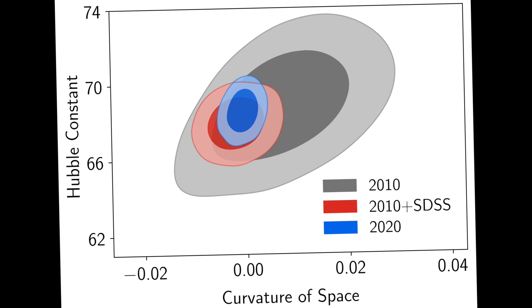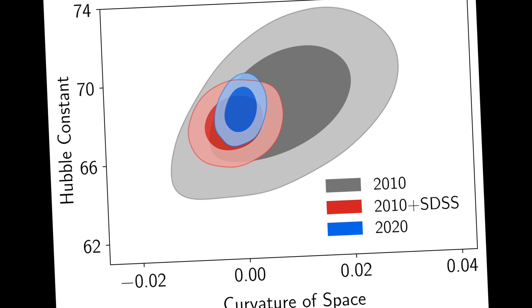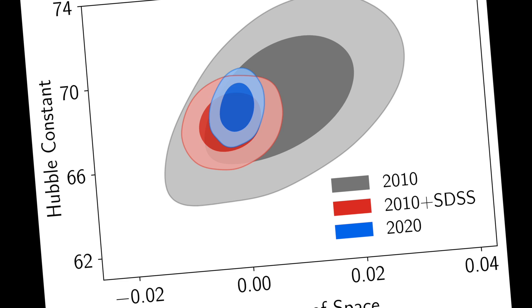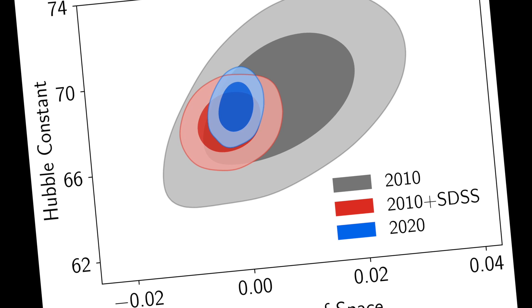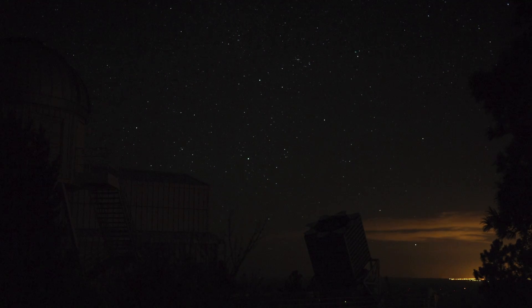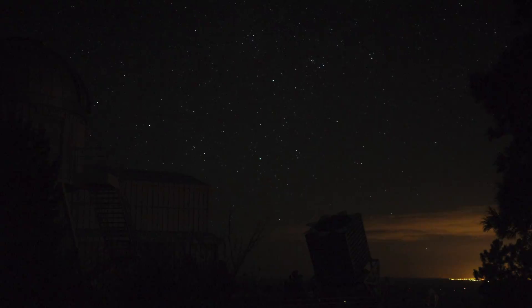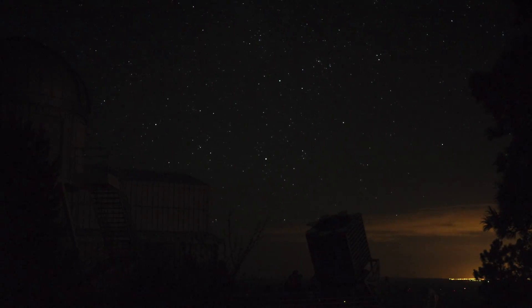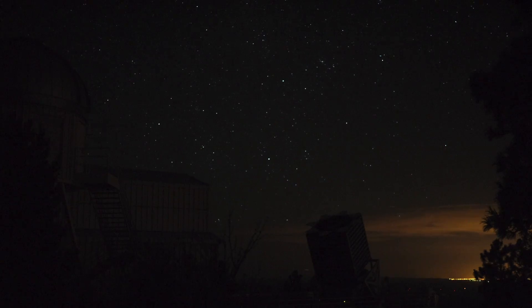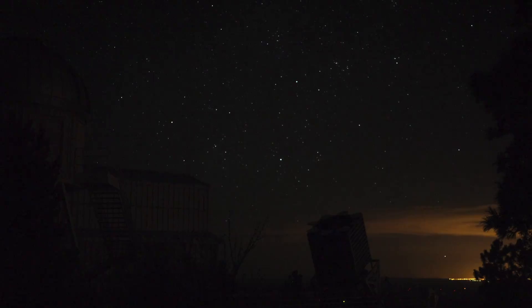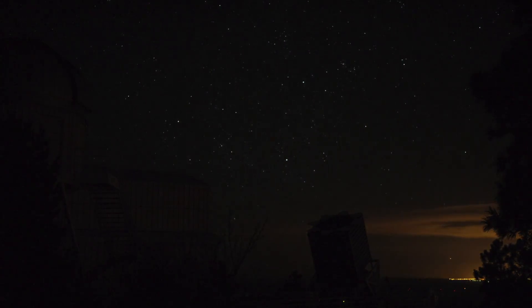The SDSS has had a huge impact over the last decade on measurements of the curvature of the universe and its current expansion, represented by the Hubble constant. We've been able to significantly shrink the allowable parameters with regards to the curvature of space. Thanks to EBOS, our best constraints show that it is nearly flat, with 70% of the current energy density in the form of dark energy — a mysterious component that is causing the current acceleration.